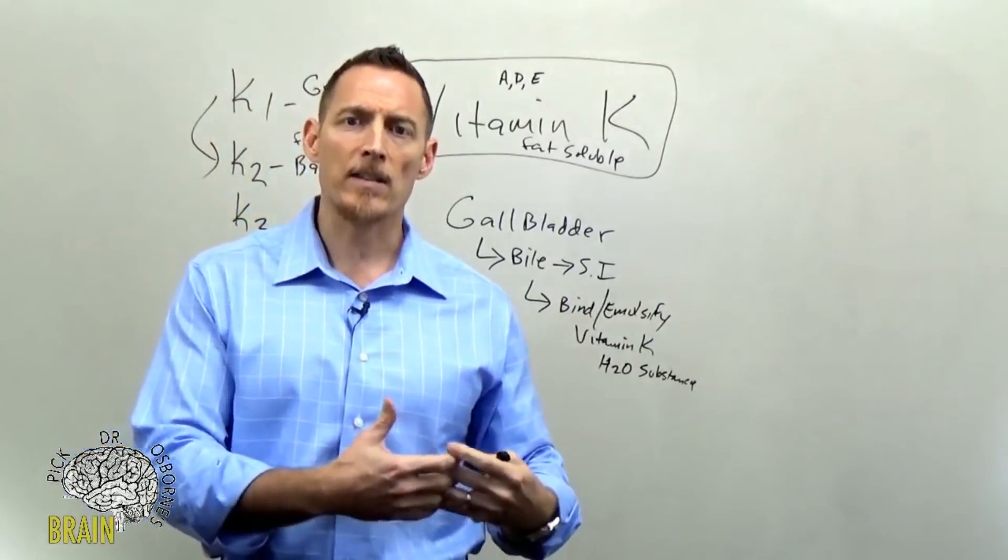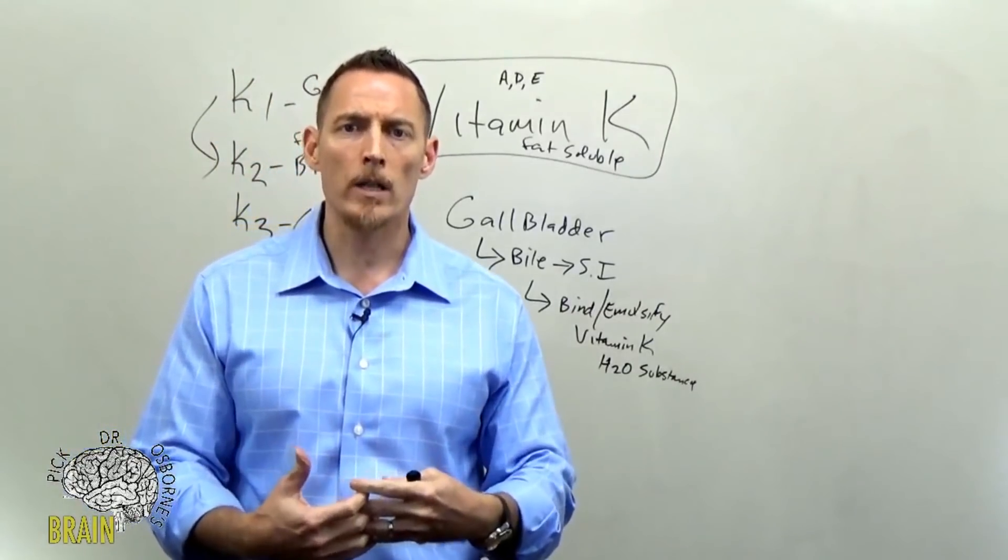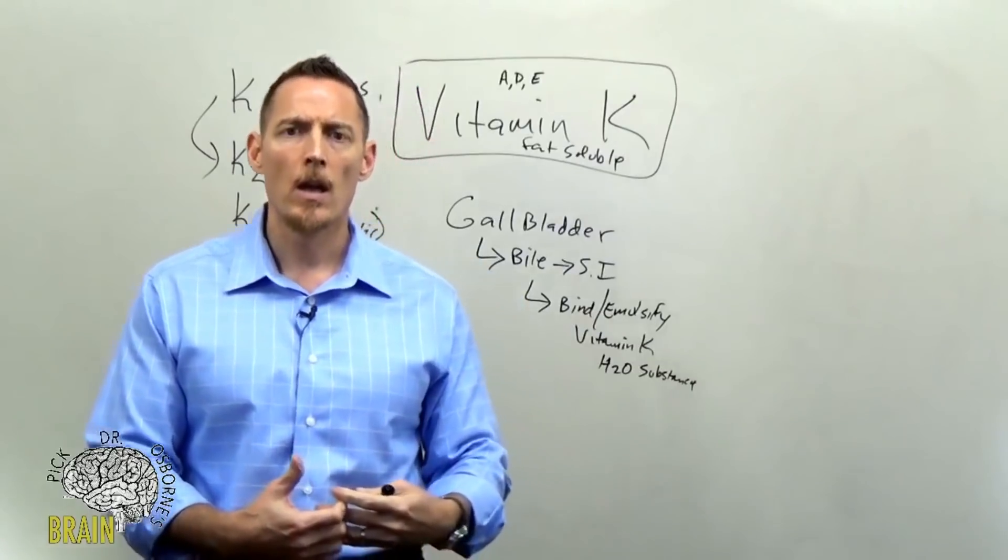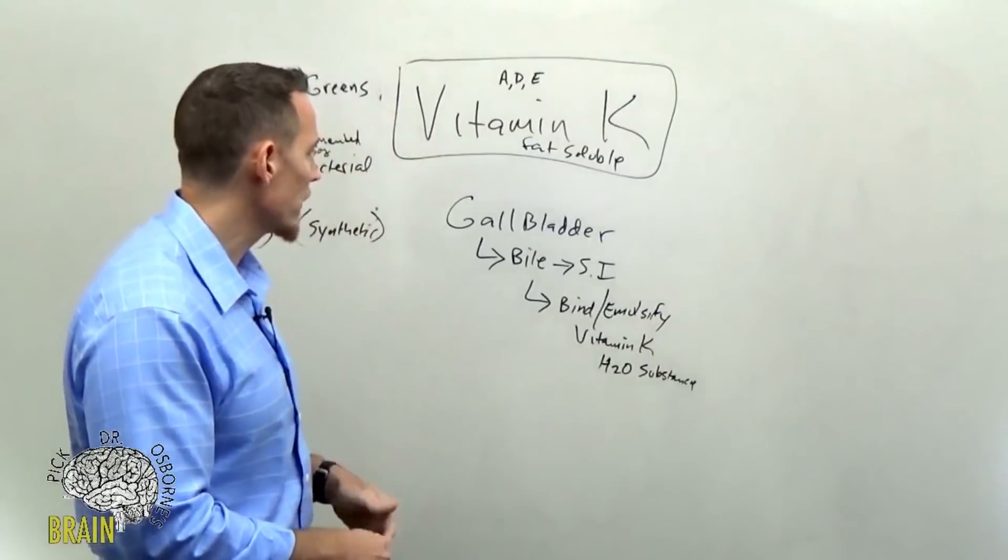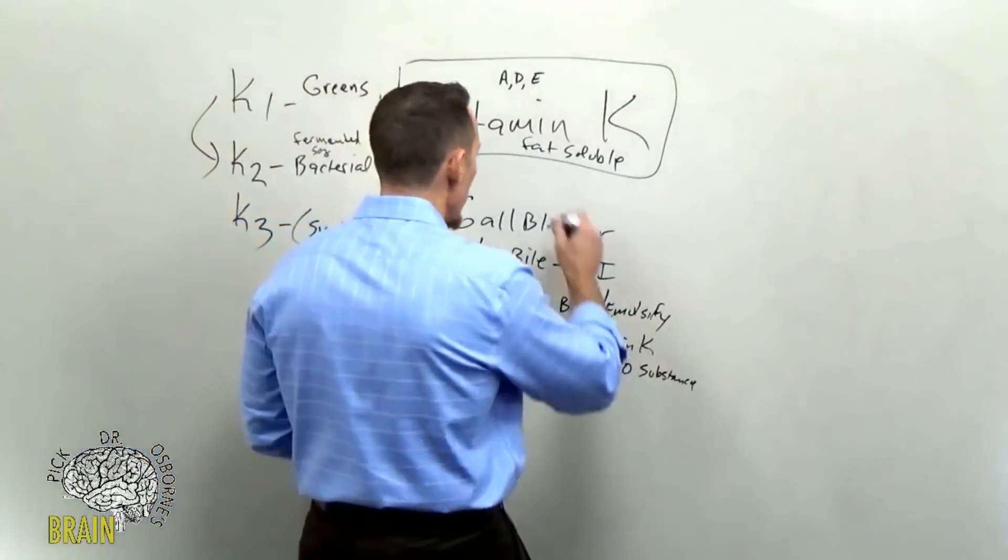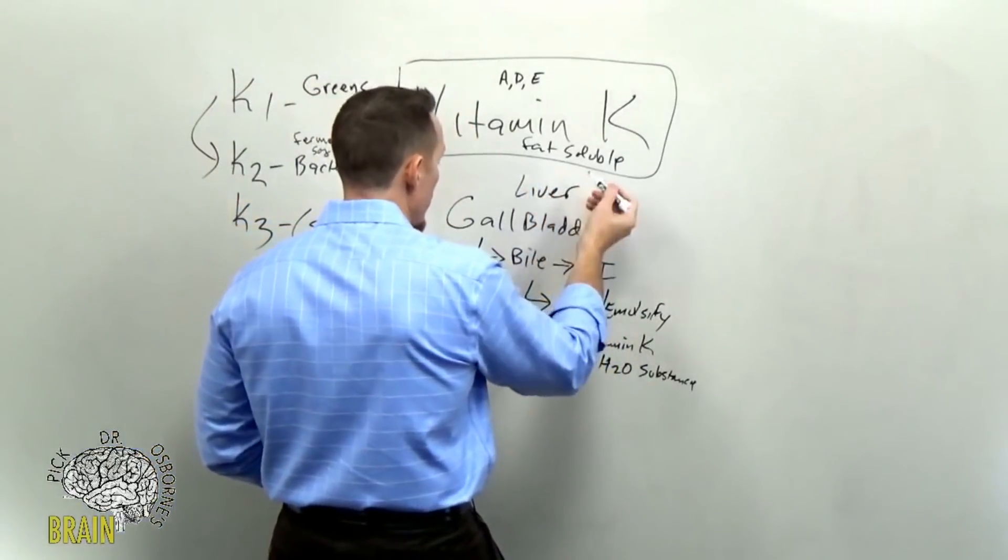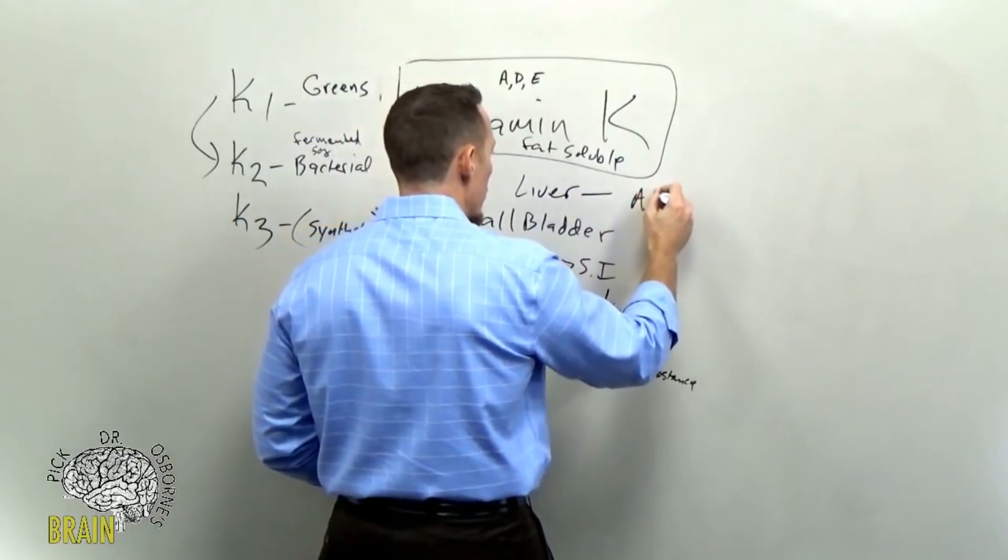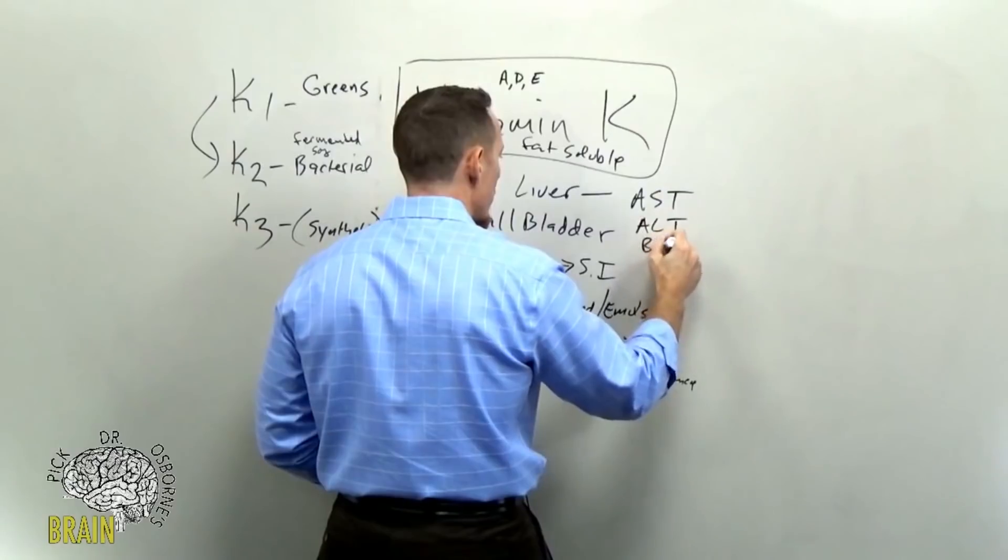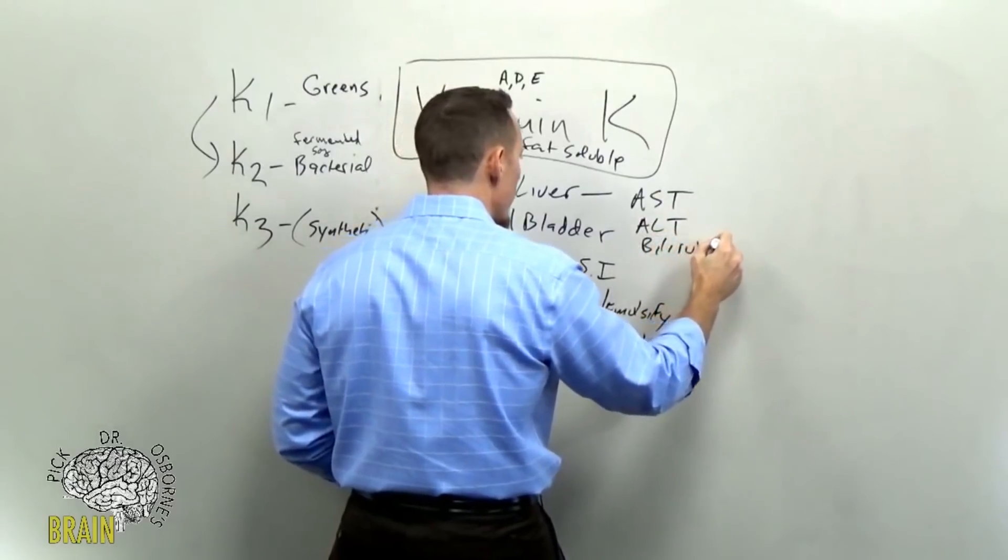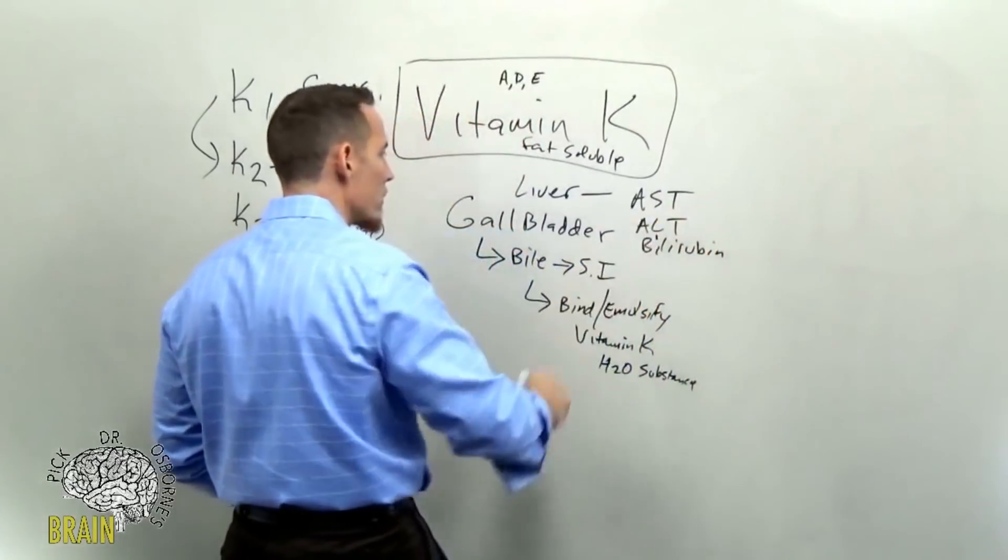There are a number of different liver function tests. Very commonly, doctors will run one of them called AST and others called ALT. There's another test that measures something called bilirubin. These are very common blood tests that doctors will measure to get a general idea of whether or not your liver function is compromised.